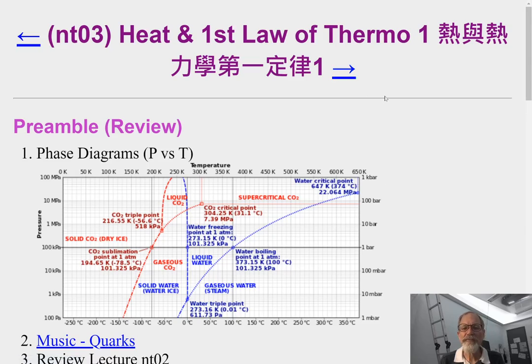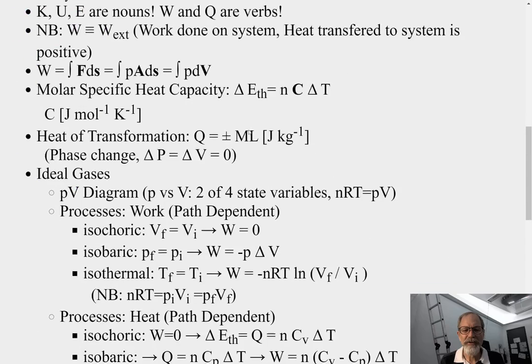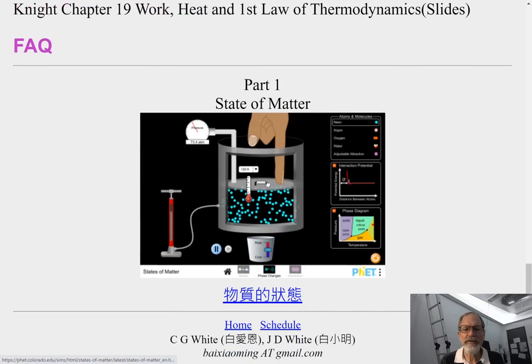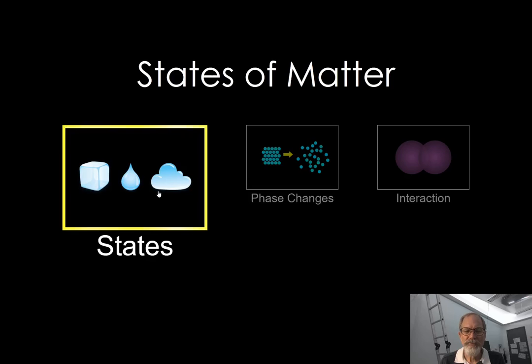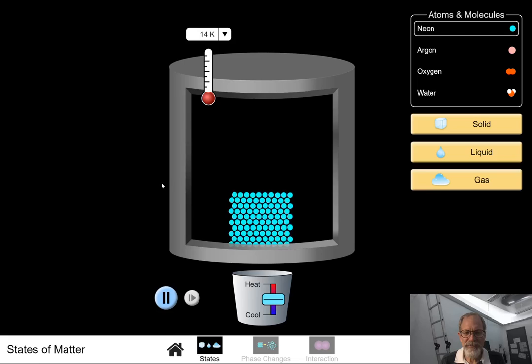So heat and the first law of thermodynamics. I'm going to start with a short review, and then we'll move into the contents of today's lecture. In our previous lecture, we talked about the states of matter. We also worked on a simulation showing the different states. The first state, solid, in which each molecule's nearest neighbors basically do not change. This guy is always closest to this guy, and it maintains its same shape.